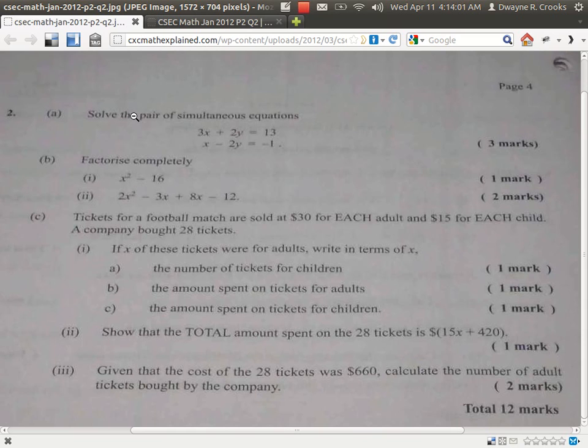In this video I'd actually work out part A alone, which is to solve the pair of simultaneous equations. The pair of simultaneous equations we have to solve is 3x plus 2y equal to 13 and x minus 2y equal to negative 1. This question is worth three marks.